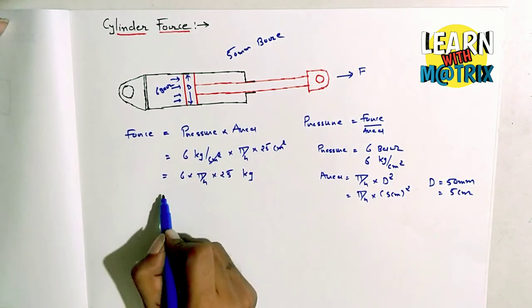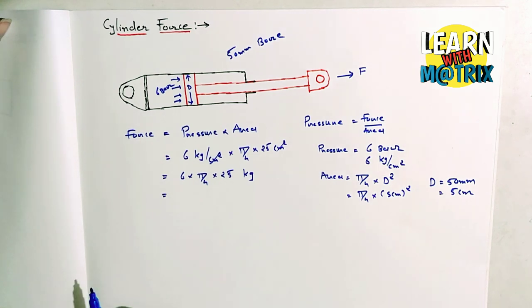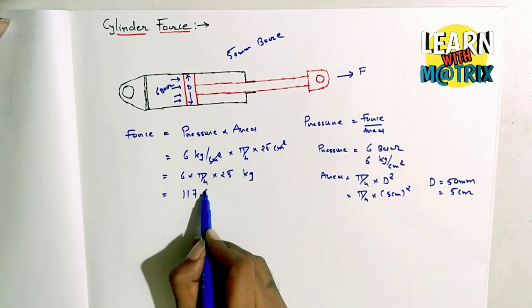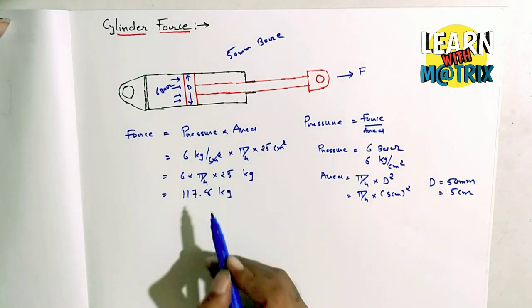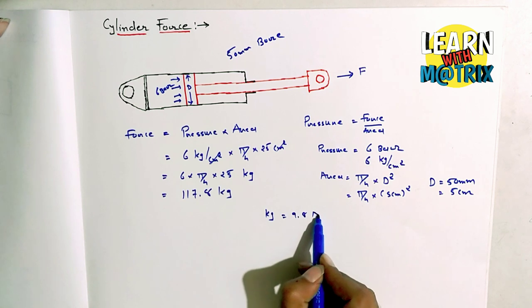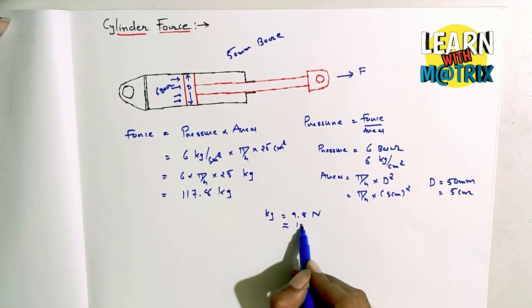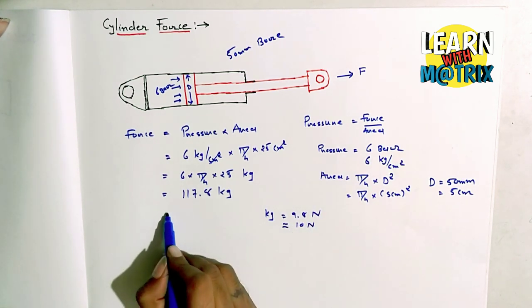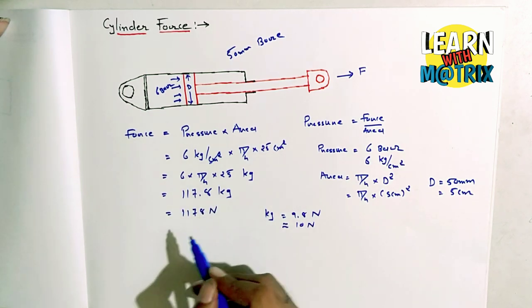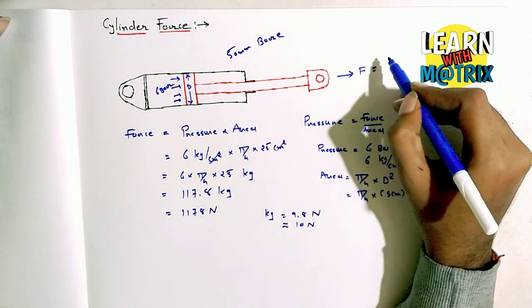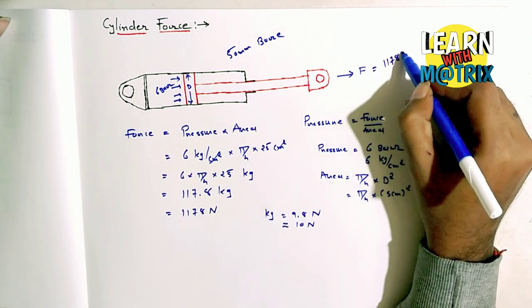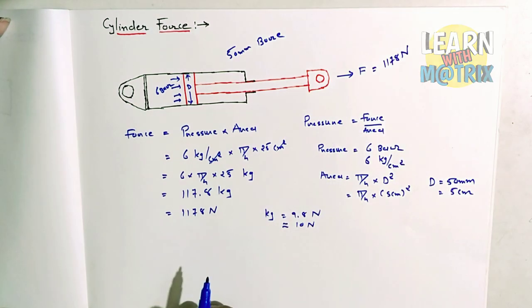If you are solving this, you have the answer of 10.6 kg. So kg is equal to 9.8 newton - we can also write 10 newton. So in newtons, 106 newton. So force at six bar pressure is 106 newton. Thank you for watching.